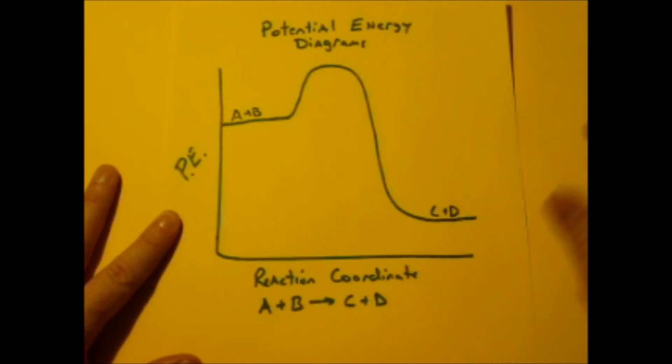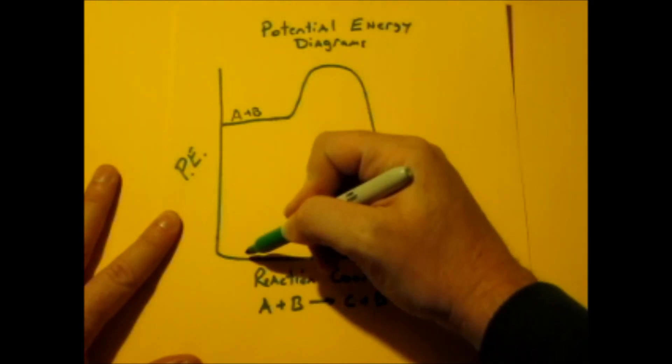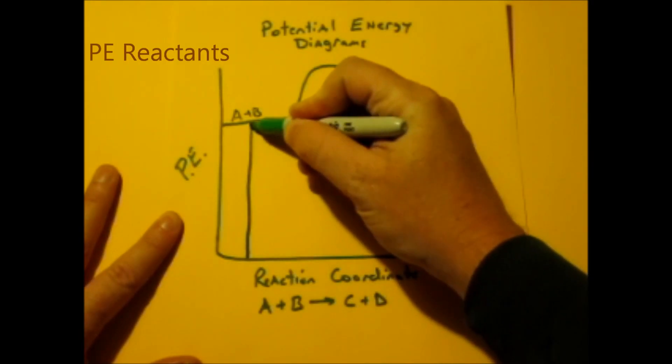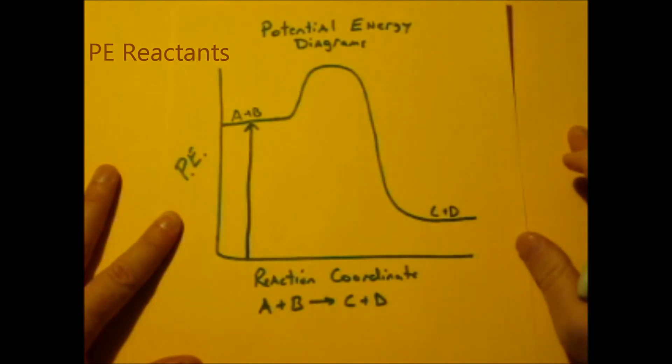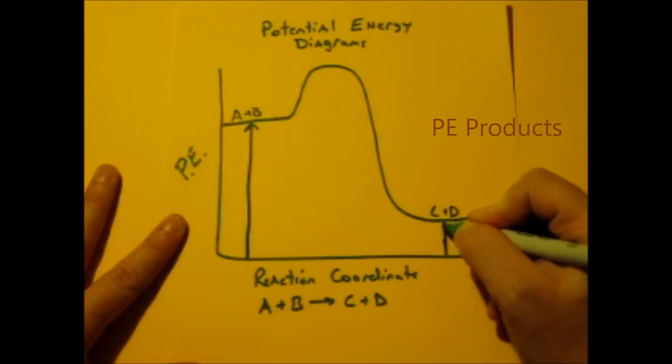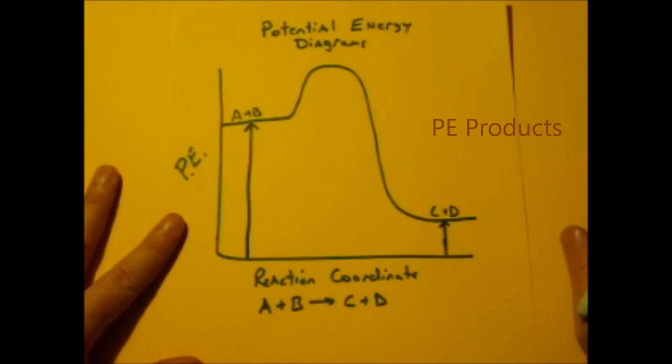What's happening here, we're going to just label everything. This arrow right here is going to represent the potential energy of the reactants. Since CD are the products, this arrow right here is going to represent the potential energy of the products.